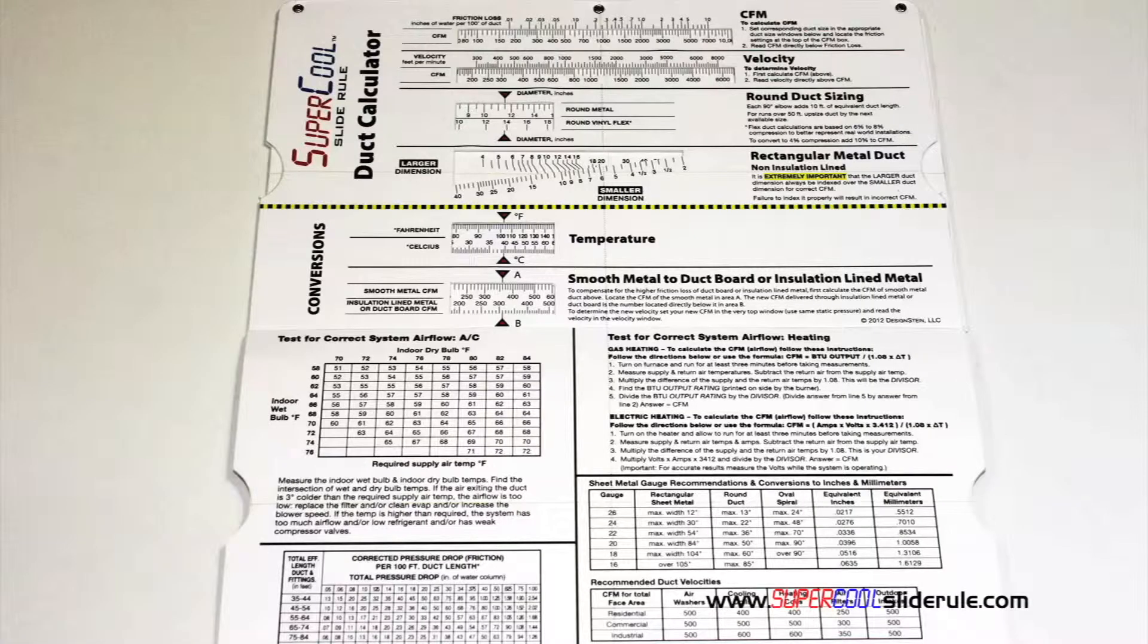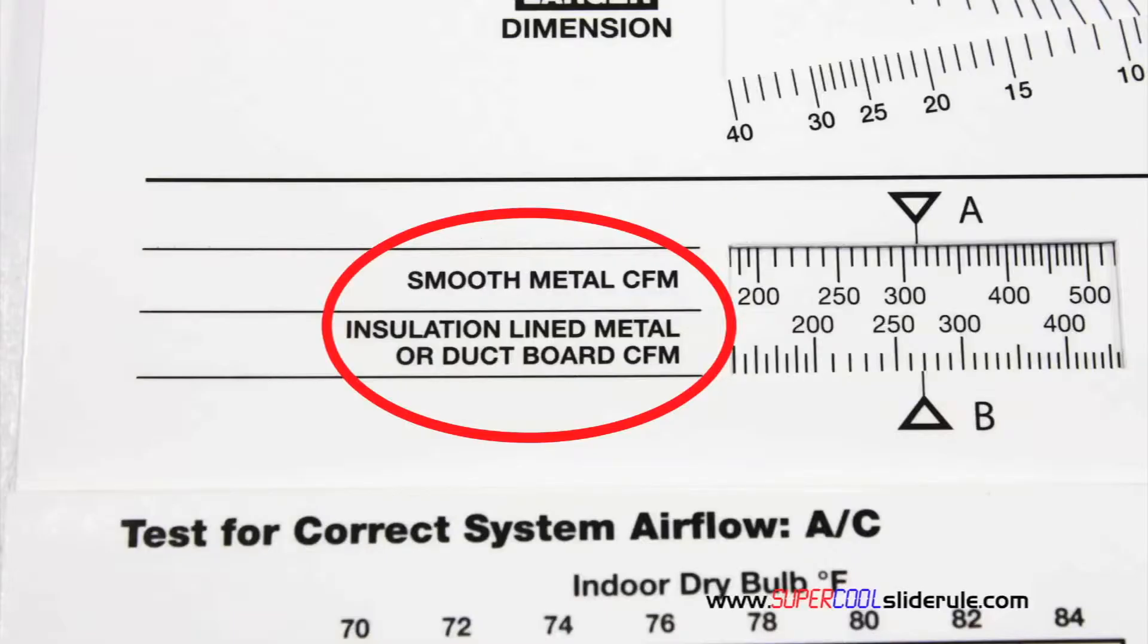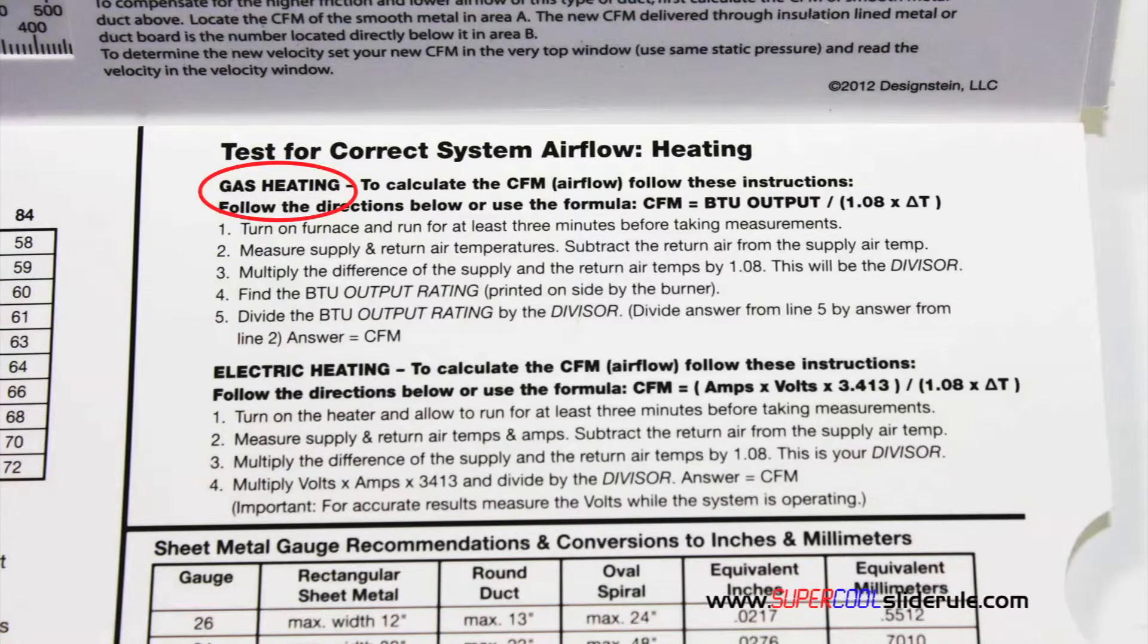Inside is packed with even more information. It performs sizing of both metal and flexible duct. It has the only direct reading conversion from smooth metal to insulation lined metal we've ever seen. The majority of technicians have never been taught that if the insulation is on the inside of the ductwork, you cannot size it with a regular duct calculator. It has step-by-step directions for determining airflow through a gas furnace, electric furnace, or an air conditioning unit.